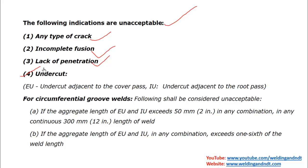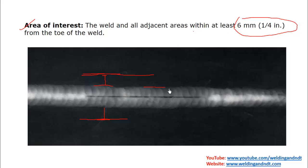Now we'll move to undercut. The code mentions EU and IU. EU is the undercut adjacent to the cover pass, and IU is the undercut adjacent to the root pass. EU occurs at the cover pass — the external undercut on the cover pass side. IU is the internal undercut that occurs at the root pass region — the root side undercut.